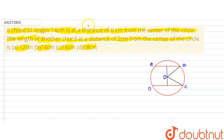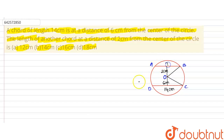In the diagram, CD is a chord whose length is 14 centimeters and its distance from the center is 6 centimeters. Another chord AB is at a distance of 2 centimeters from the center. We will calculate the length of AB.